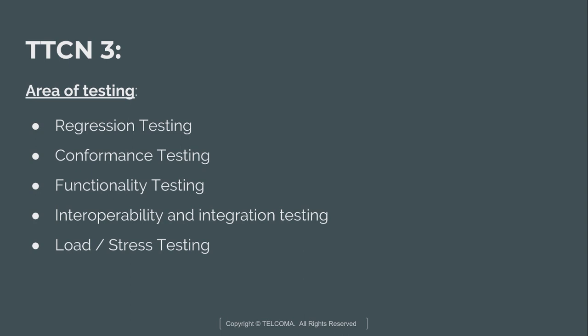The next testing area is conformance testing, also known as compliance testing. It is used to determine that a design, product, process, computer program, or system meets a defined set of standards, rules, and regulations. After that, functionality testing is a software testing process used to test the software functionality.